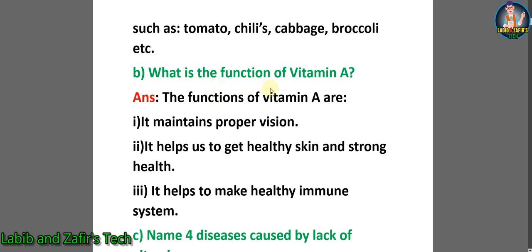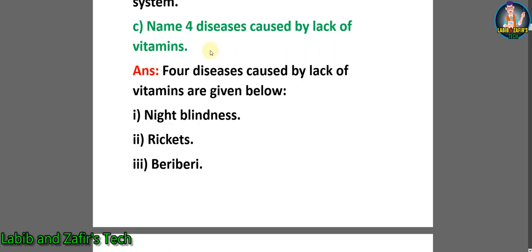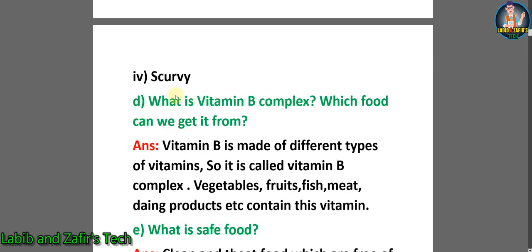B: What is the function of vitamin A? Answer: The functions of vitamin A are — Number 1: it maintains proper vision. Number 2: it helps us to get healthy skin and strong health. Number 3: it helps to make a healthy immune system. C: Name four diseases caused by lack of vitamins. Answer: Four diseases caused by lack of vitamins are — 1. Night blindness, 2. Rickets, 3. Beriberi, 4. Scurvy.